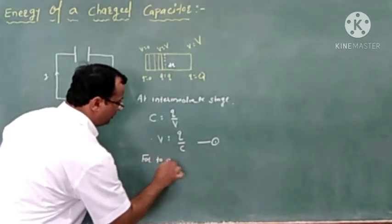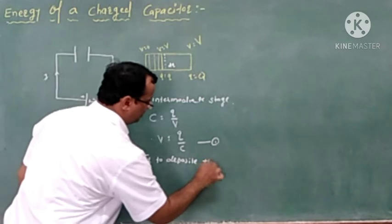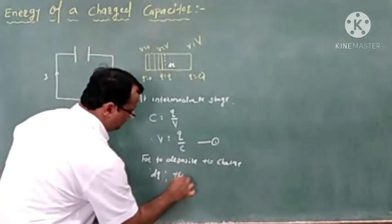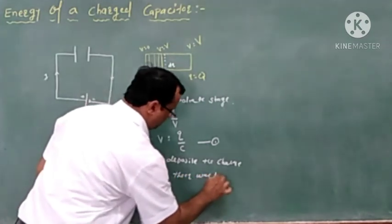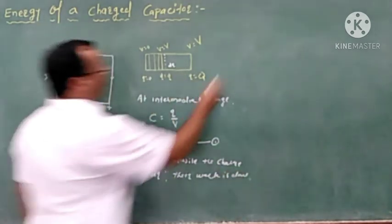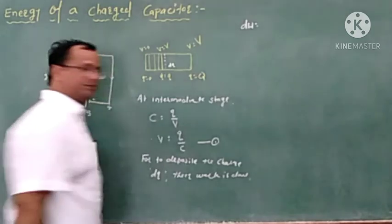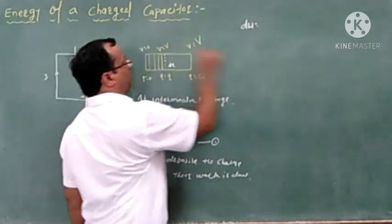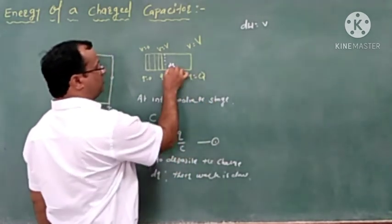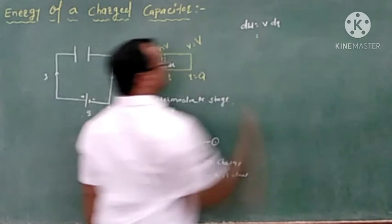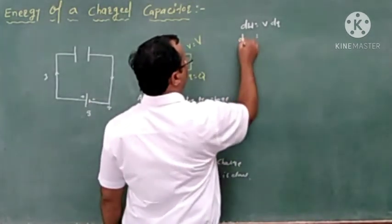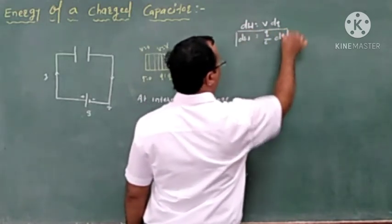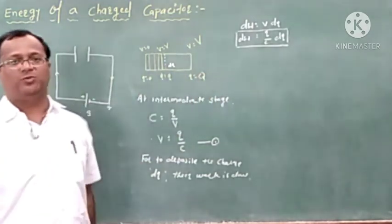If we want to deposit the small charge dQ, the existing charges apply an opposing force. So to deposit the charge dQ, some amount of work is done. The work done dW equals electrical potential times charge. At this stage the value of electrical potential is V, and we want to deposit the small charge dQ. So dW equals V times dQ, which is q upon C times dQ.